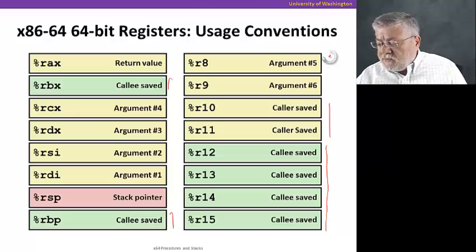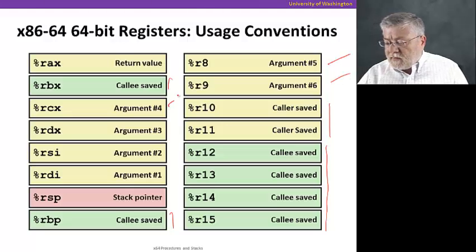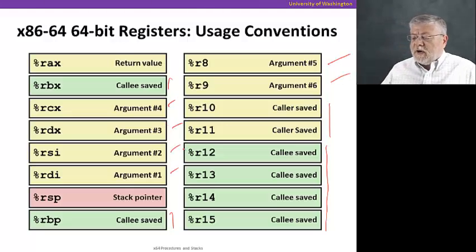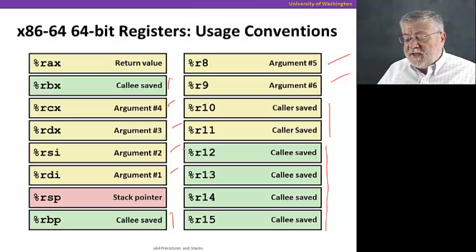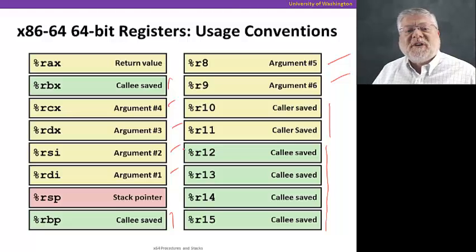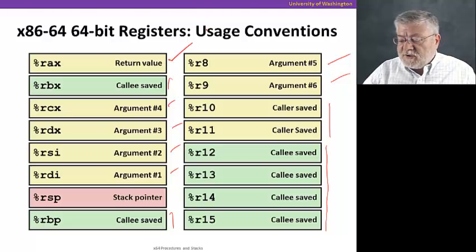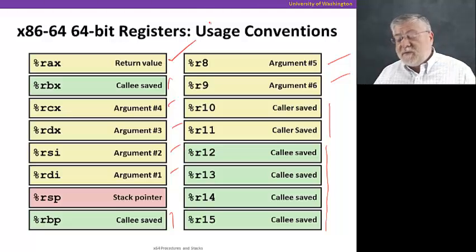We're going to use 6 registers in these locations for passing arguments, taking care of 6 arguments for a procedure. If we have more than 6 arguments, we'll have to go back to using the stack. But for the most part we'll use these, and most procedures have just a couple of parameters, so most of the time we won't have to use the stack. We're still going to use RAX for the return value of a procedure and RSP for the stack pointer.